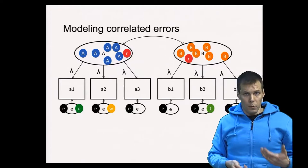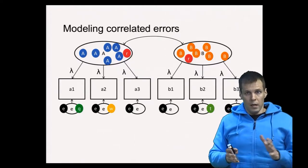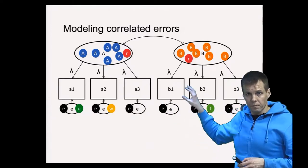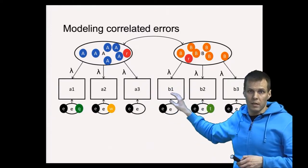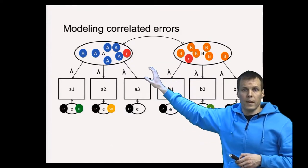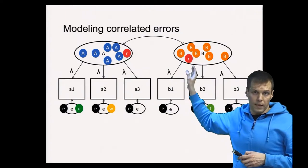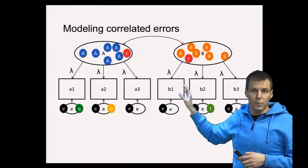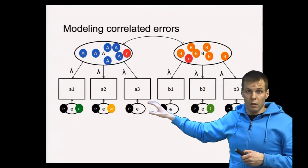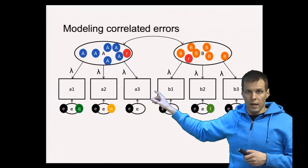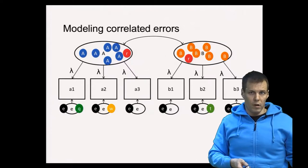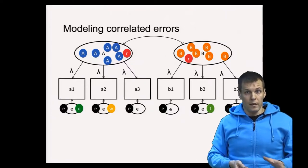This is also the case in exploratory factor analysis. If there is a minor factor that influences A3 and B1 and we only extract two factors, the factor correlation between those two factors will be inflated. If we were to run an exploratory analysis, it could identify a third factor loading on A3 and B1, but because it's just two indicators, the exploratory analysis might not identify that factor.